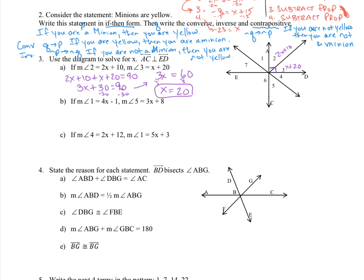Part B is a different problem. Angle 1 is 4x minus 1, and angle 5 is 3x plus 8. A straight line crosses through — these are vertical angles, and vertical angles are congruent. So 4x minus 1 equals 3x plus 8. Subtracting 3x and adding 1 to each side gives x equals 9.